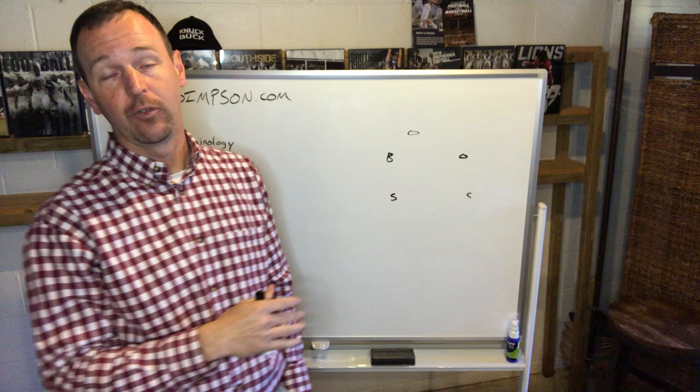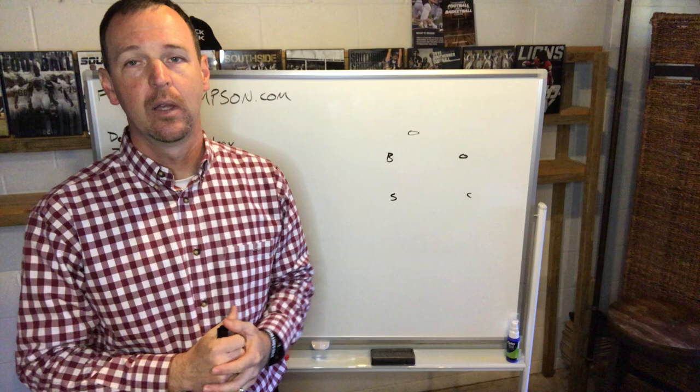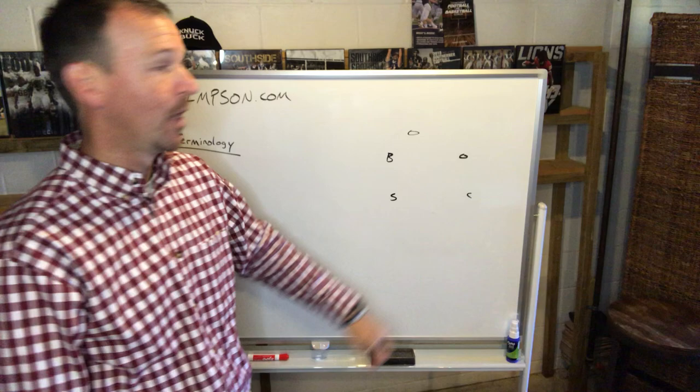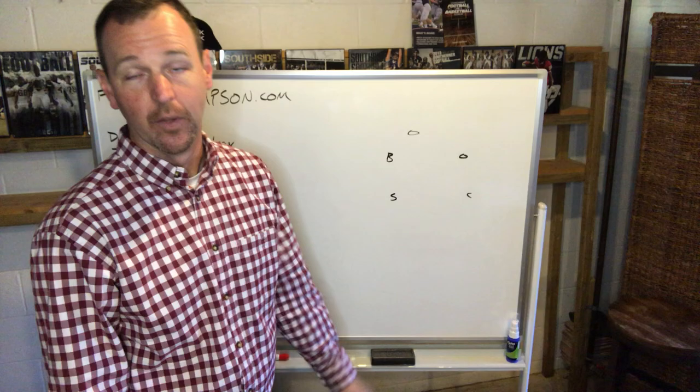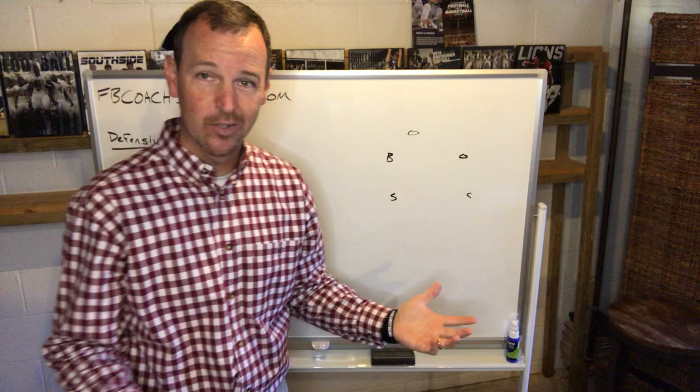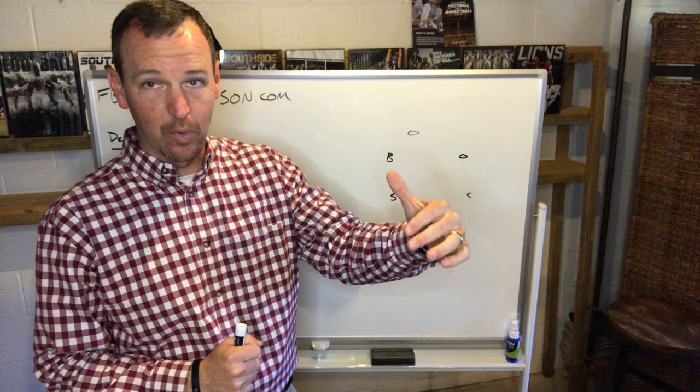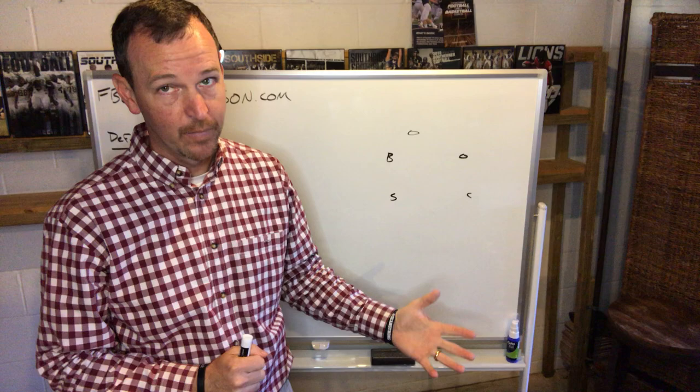I'm going to give you basically how we would do cover two read with it being a match. We're not running to a landmark. The old school way, you tell your outside linebacker you've got hook to curl, corner you've got flats, safety you've got over the top — nothing inside of you, you've got that deep cover two. That's the way it was taught, and essentially that's usually how they're going to end up. But we now teach reading people, not reading grass, because we want our kids stopping the ball.